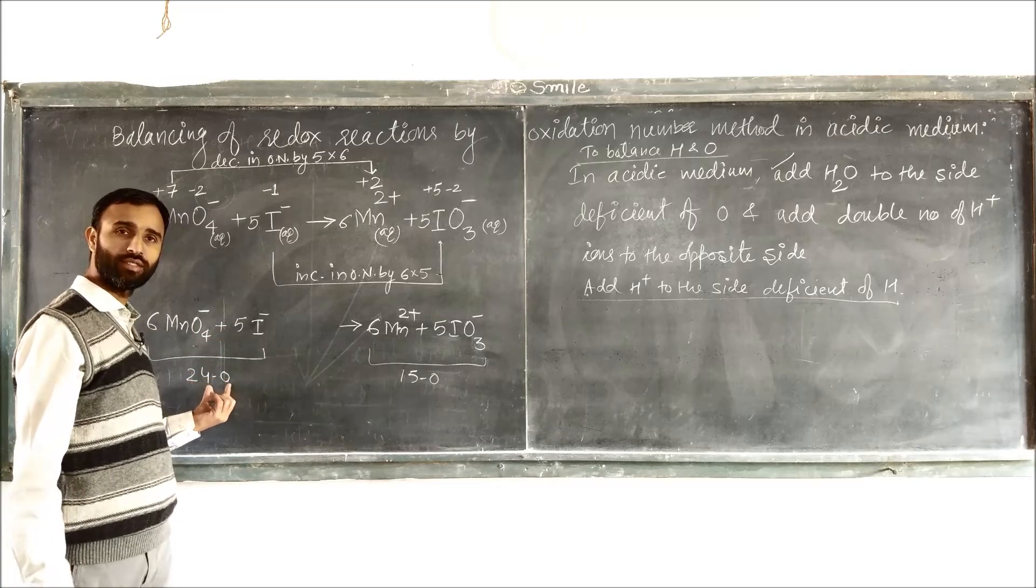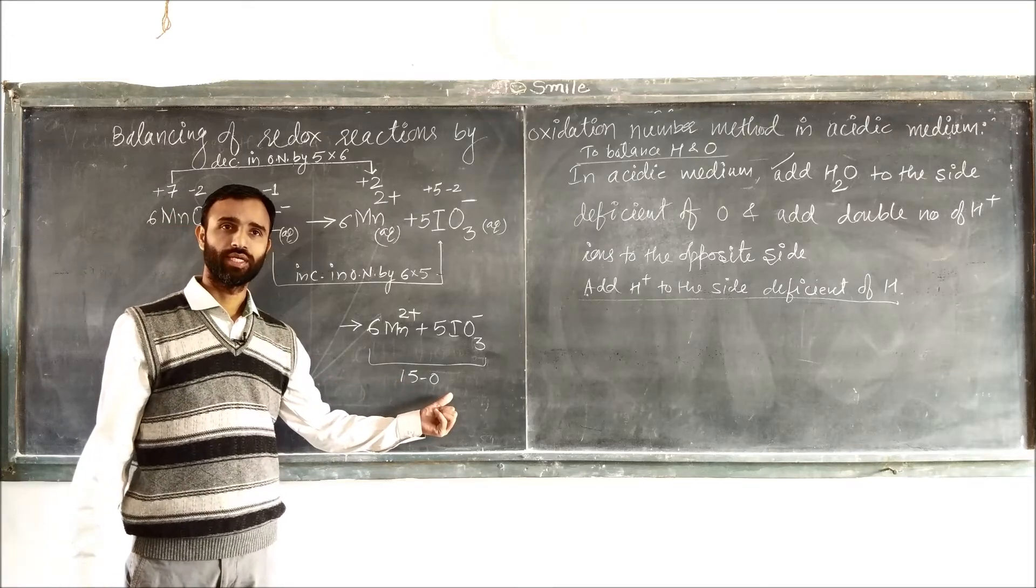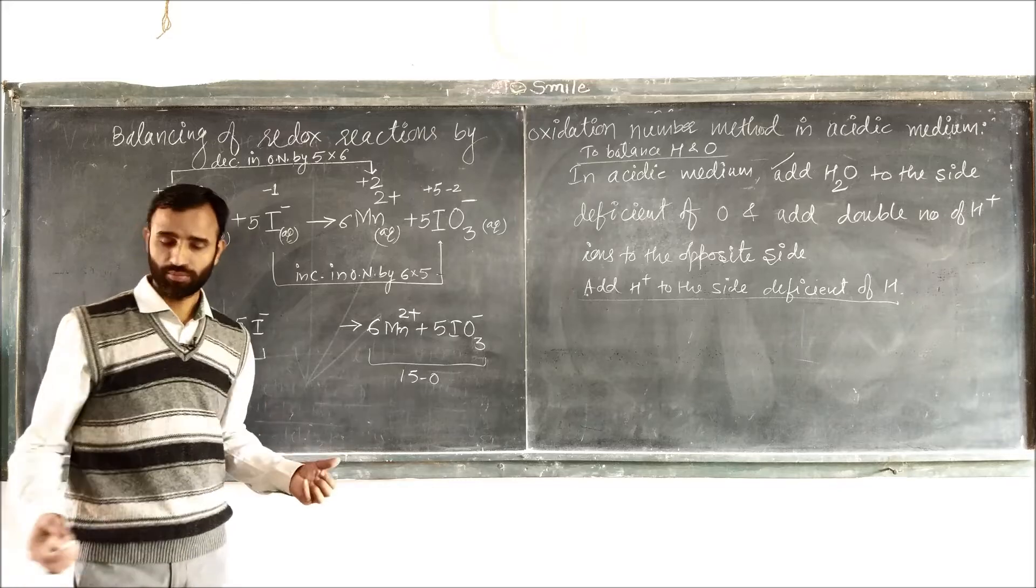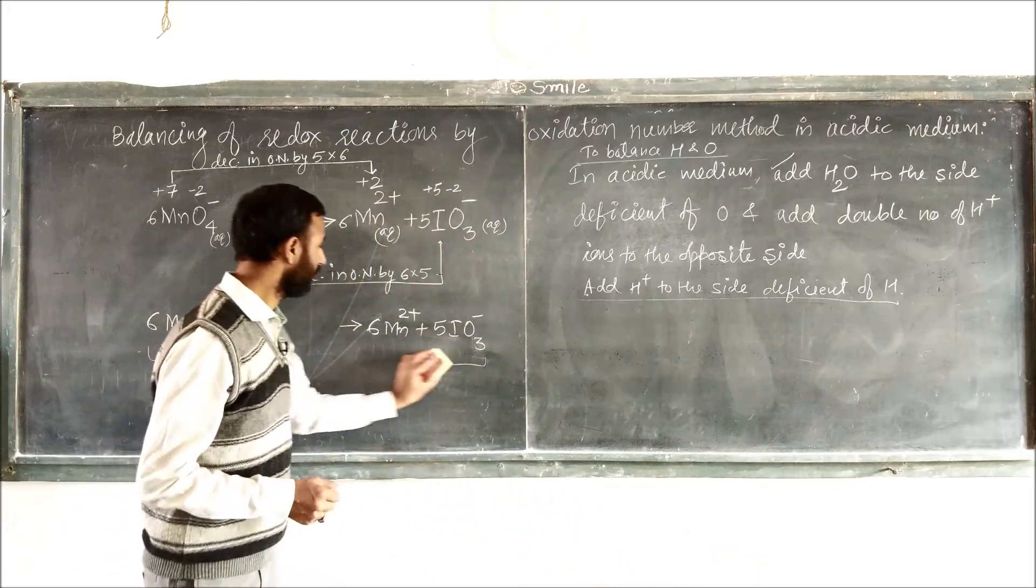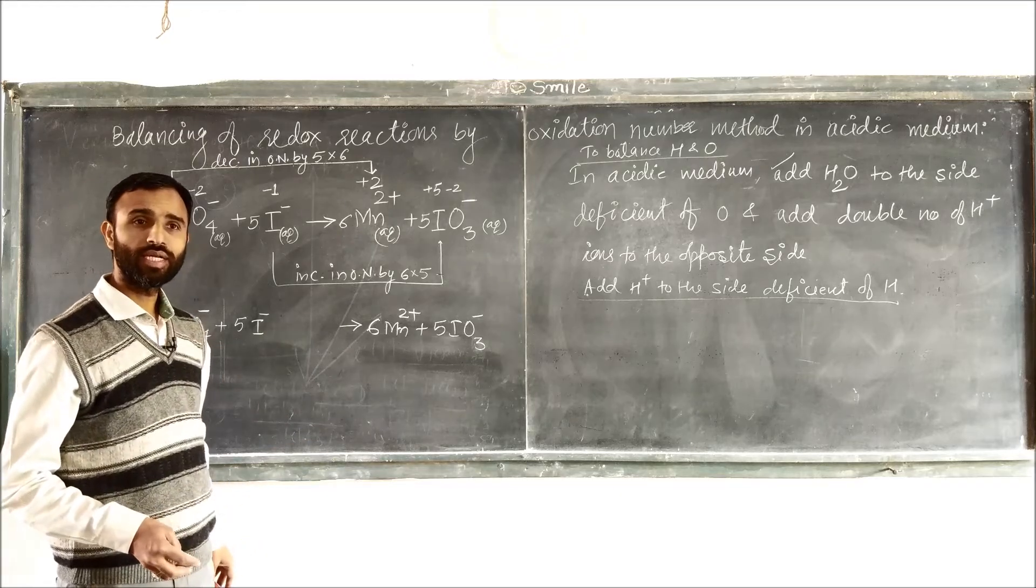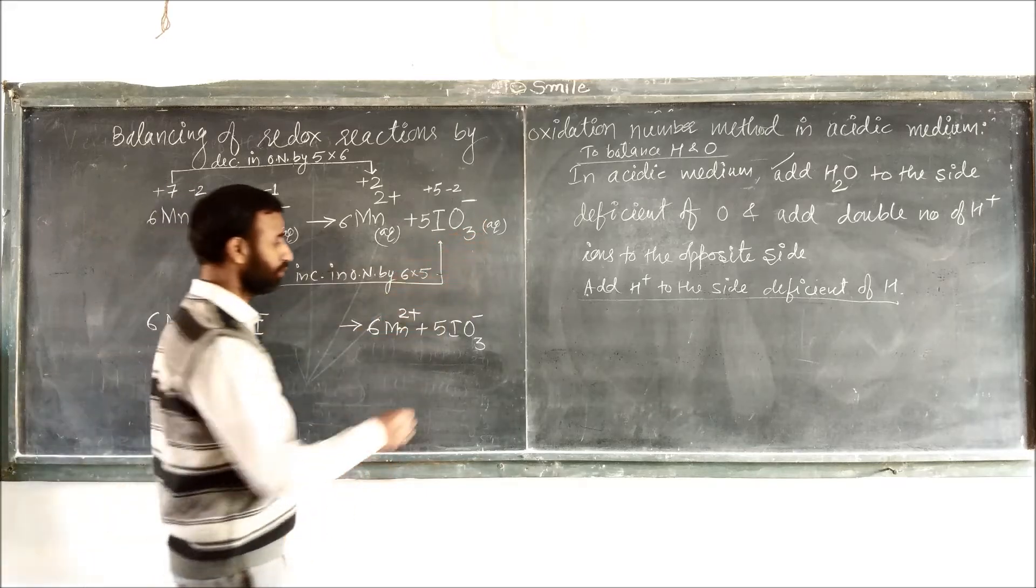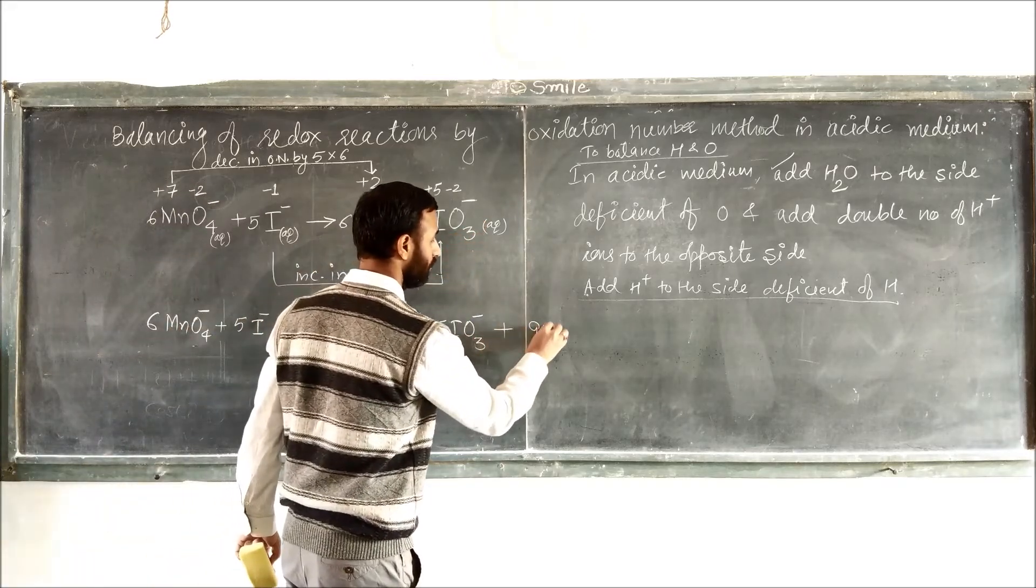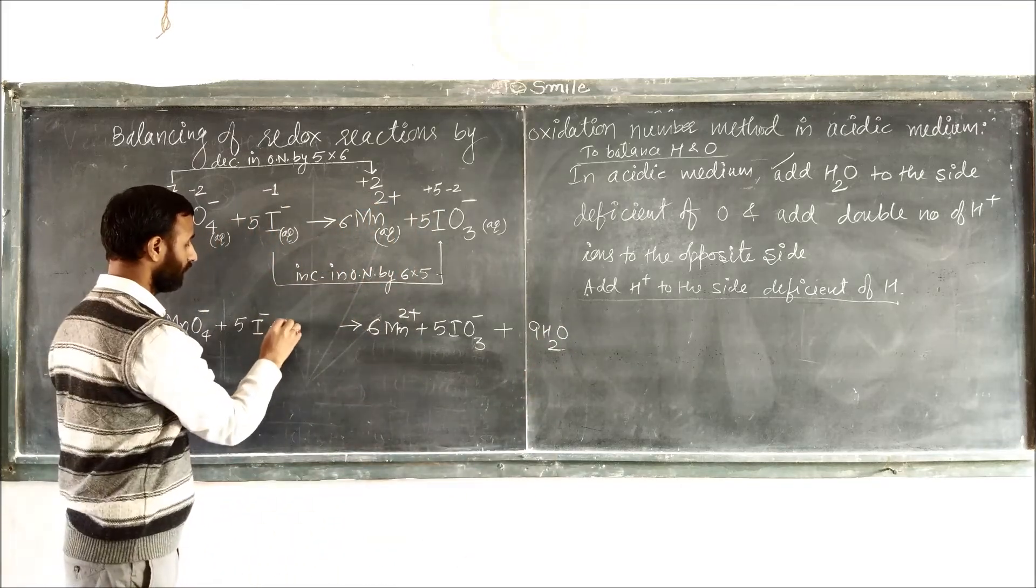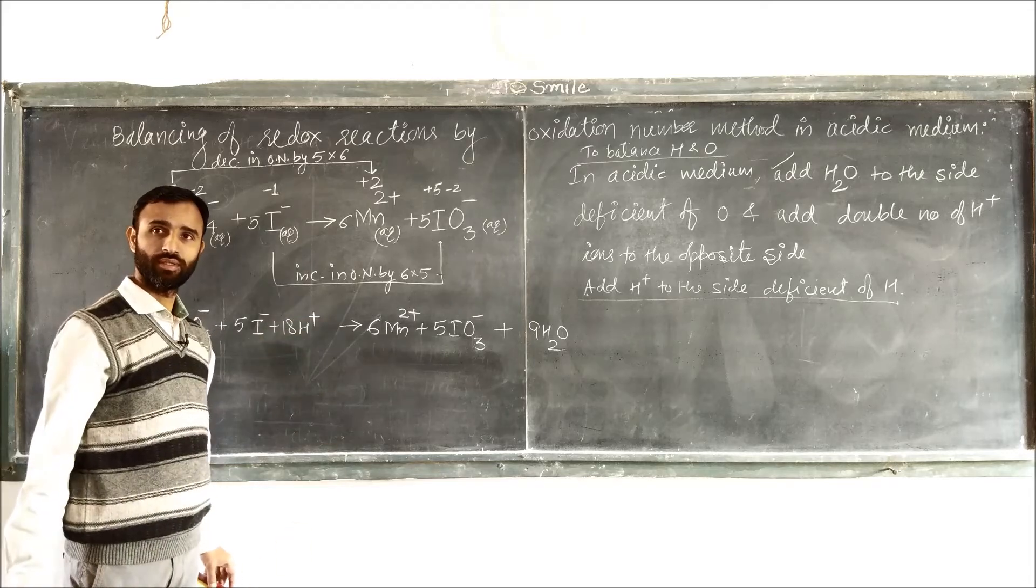Apply the rule. On this side number of oxygens are 24, on other side 15. So what is the difference? 9. That means we should add 9 H2O to the side deficient of oxygen. We add 9 H2O on this side and double number of H plus to the opposite side, that's it.